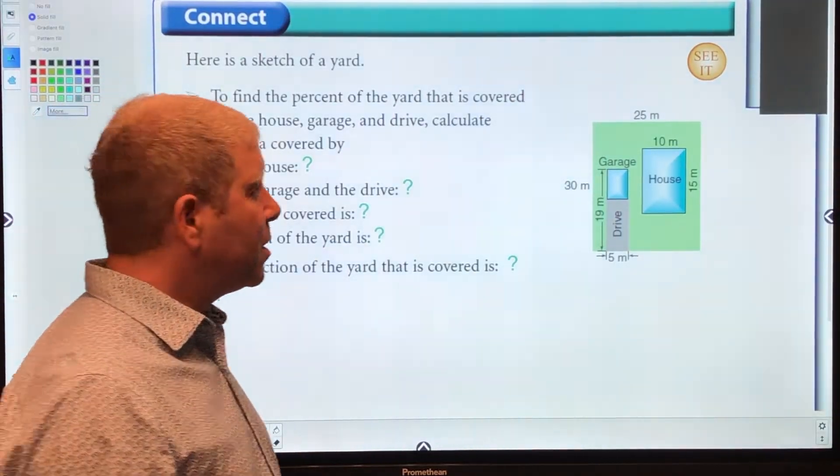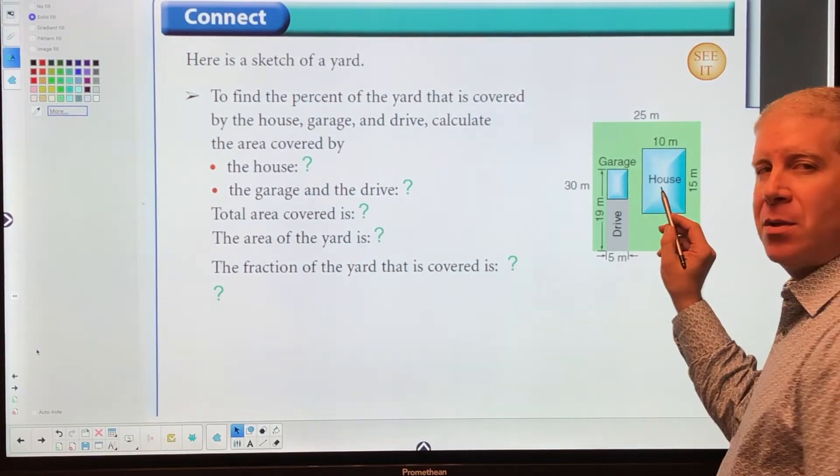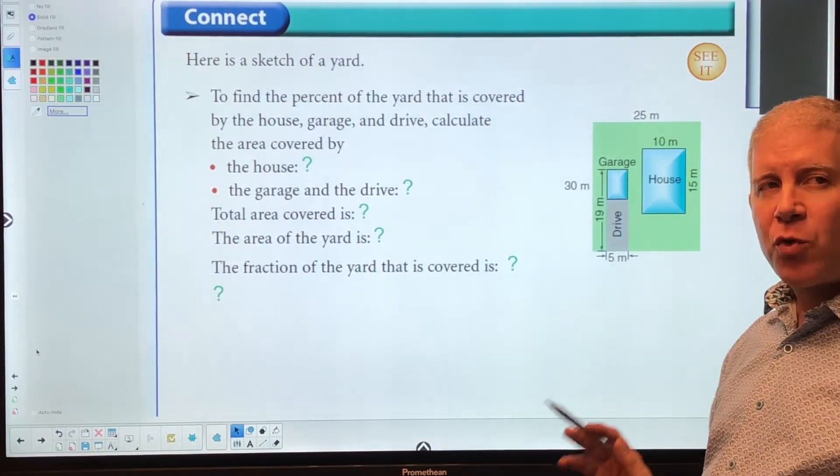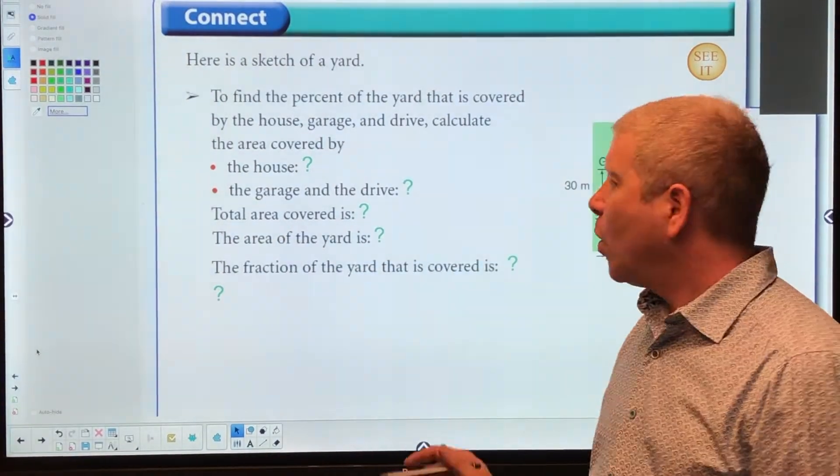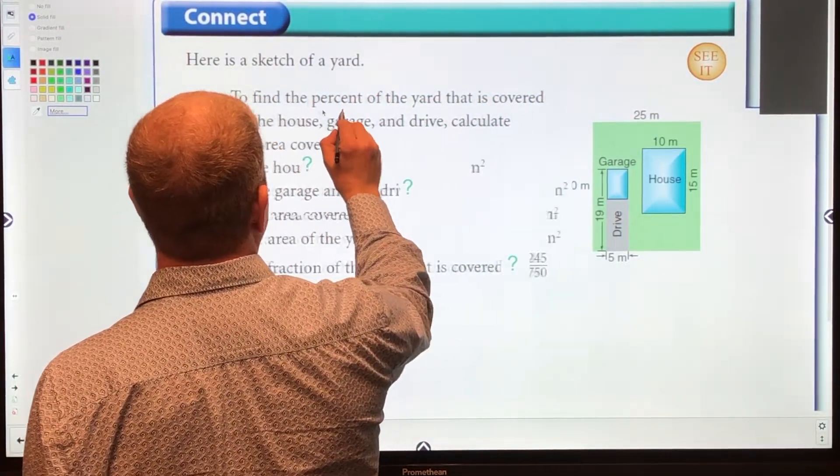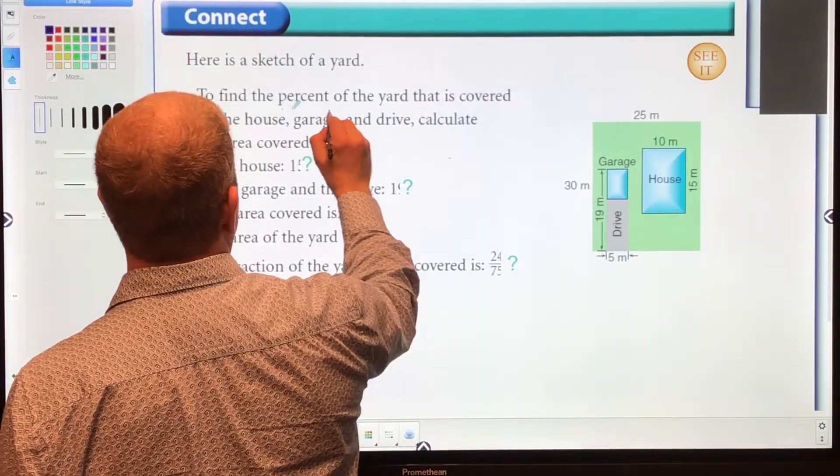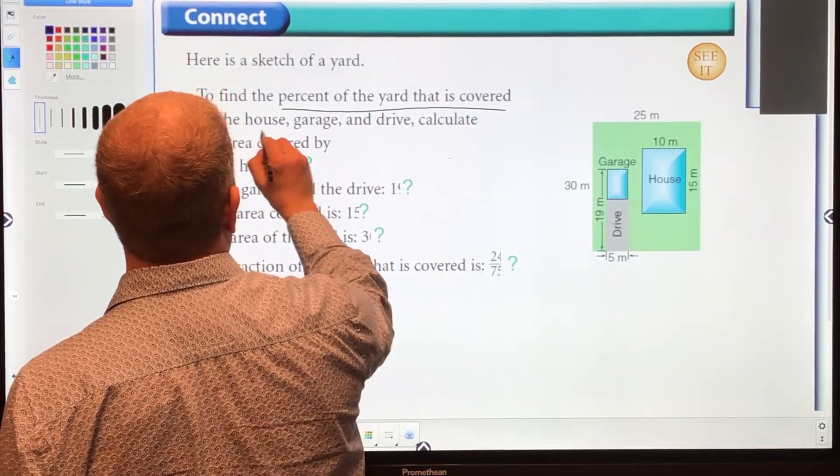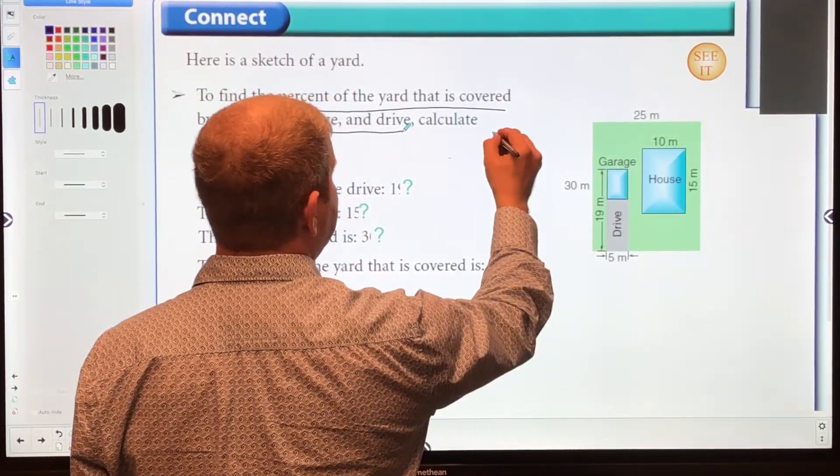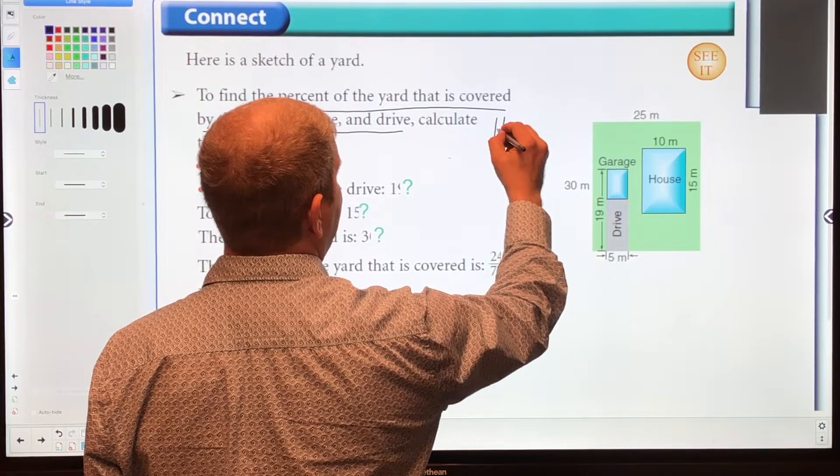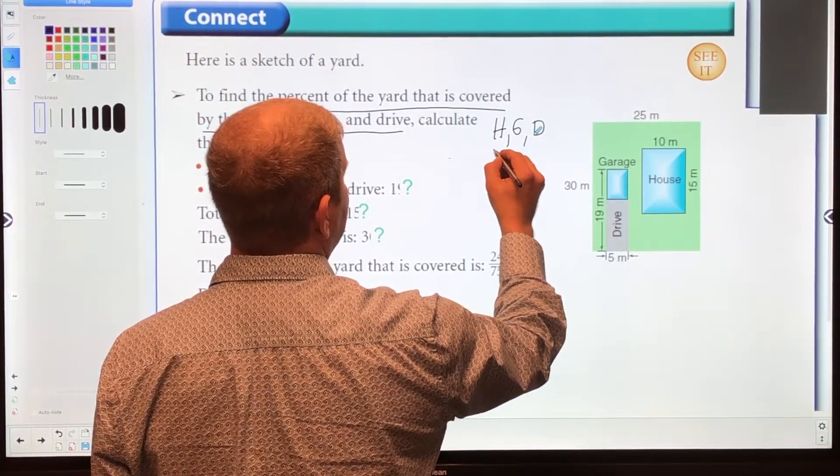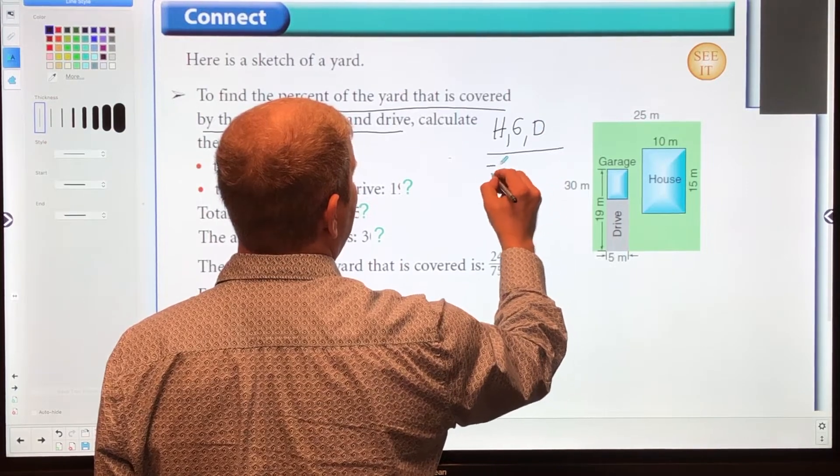In this example, we've got a house, garage, and driveway. What we're trying to figure out is the percent of the yard that's covered by the house, garage, and drive. So we want to know house plus garage plus drive divided by the total.